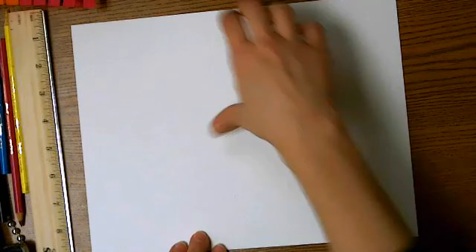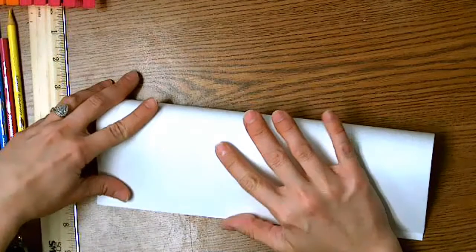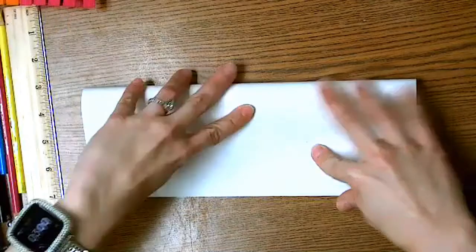You're going to start out with a piece of paper that's about the size of computer paper. I'm using cardstock. If you don't have cardstock, it's okay. You're going to fold it in half from the top to the bottom horizontally.